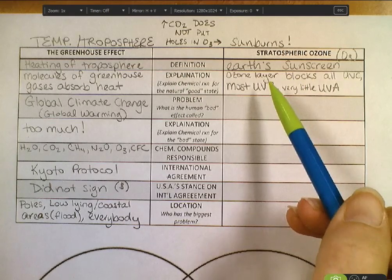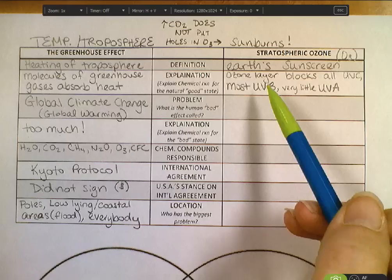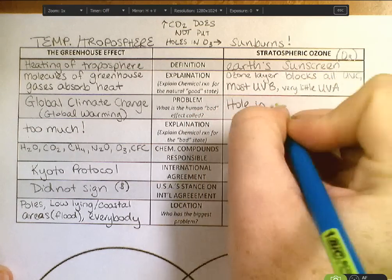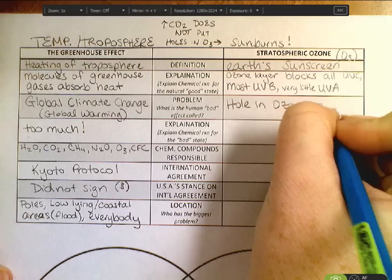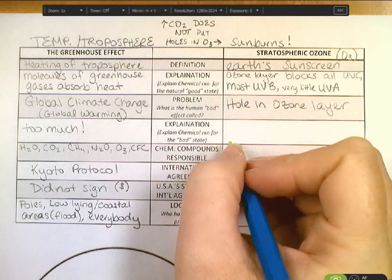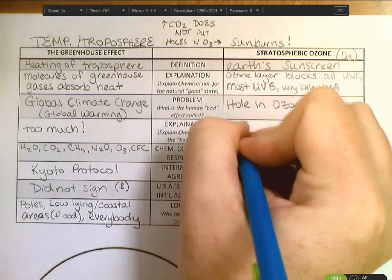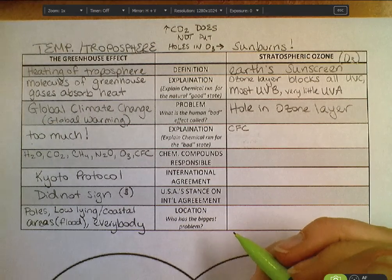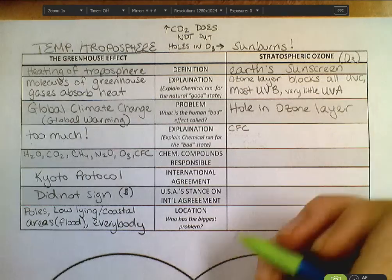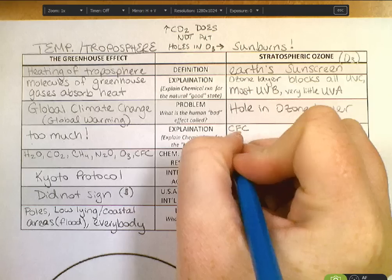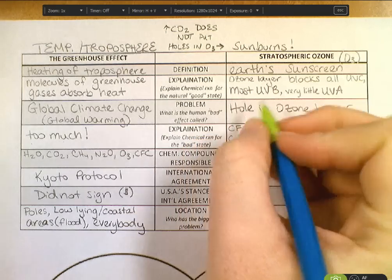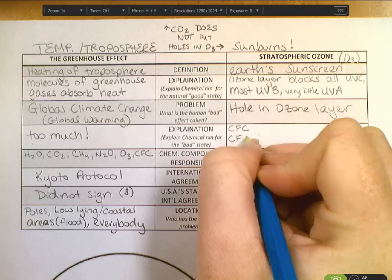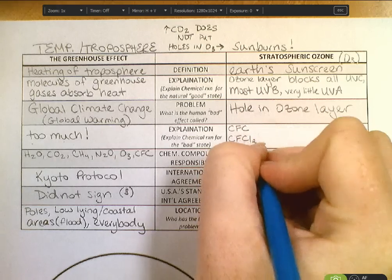Now the problem is that this is not what's happening now. We don't have the normal, natural good state. Instead, we have the problem we call the hole in the ozone layer. The explanation: what you have is CFCs — chlorofluorocarbons. The real formula for CFCs, even though we say chlorofluorocarbon, puts the carbon first, then the fluorine, then the chlorine, and there are three of them.